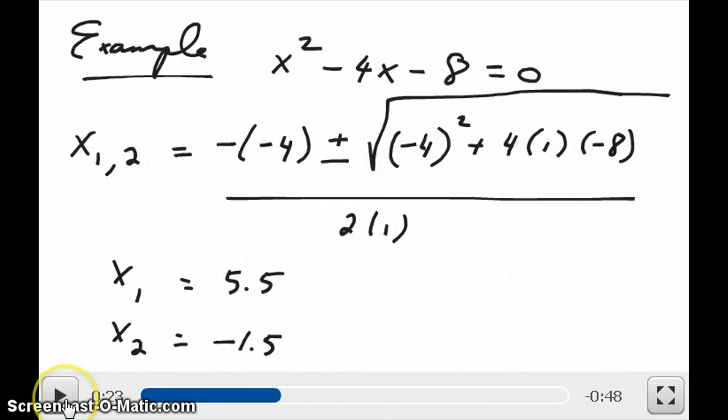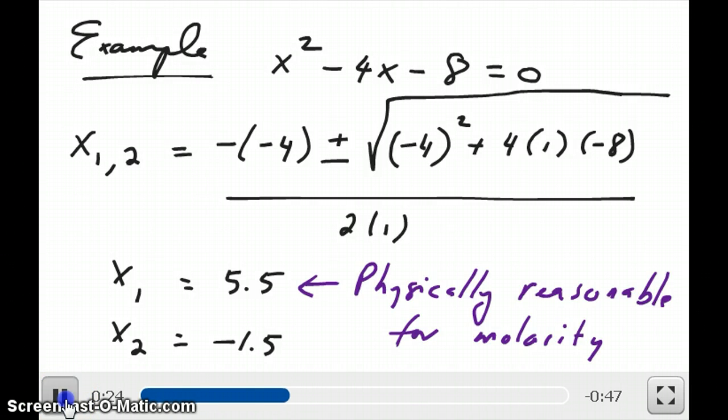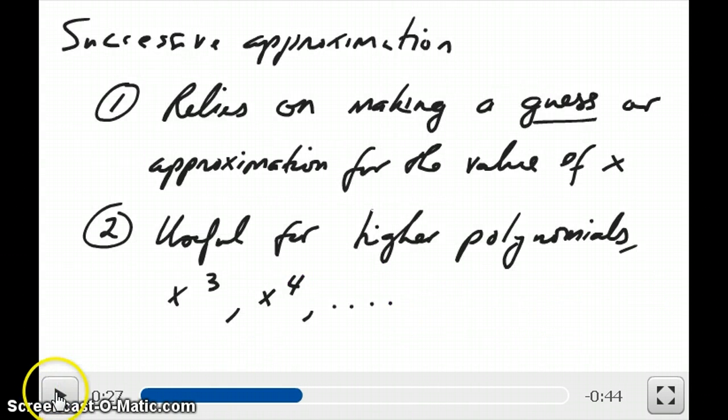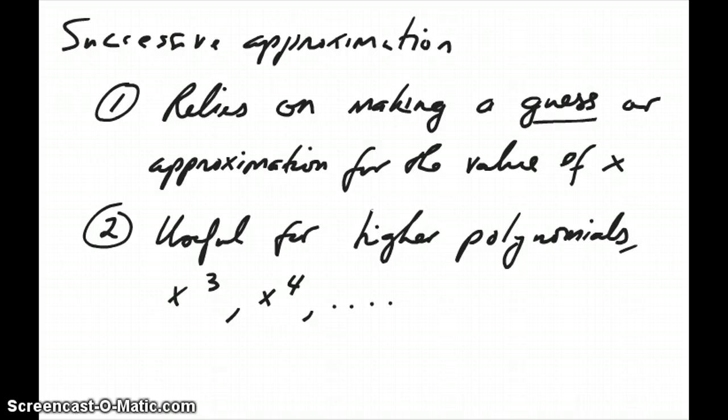Now in chemistry, a lot of times it's fairly easy to distinguish which one is the correct answer because usually x, like I said earlier, represent concentration or molarity, so it doesn't make sense to have a negative molarity or concentration, so then the positive number would be the one that makes sense. So in other words, negative 1.5 can be gotten rid of.